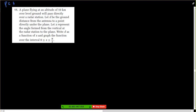All right, so we're pre-calculus 30. This is 5.3, number 11. Number 11 says a plane flying at an altitude of 10 kilometers. So we know we have an altitude here of 10 kilometers from the ground to wherever this plane is. Over level ground it will pass directly over the radar station. Let D be the ground distance from the antenna to the point directly under the plane.